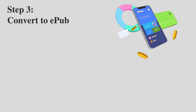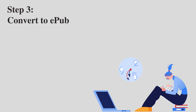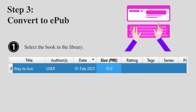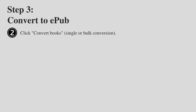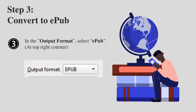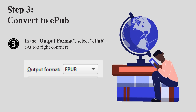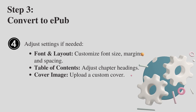Step 3: Convert your book. First, select the book in the library. Second, click Convert Books — single or bulk conversion. Third, in the output format, select EPUB. Fourth, adjust settings if needed.